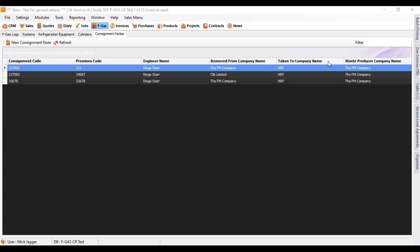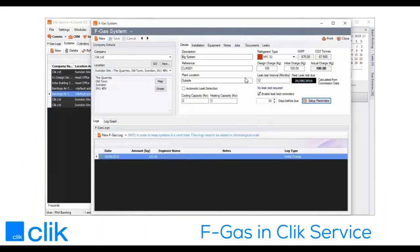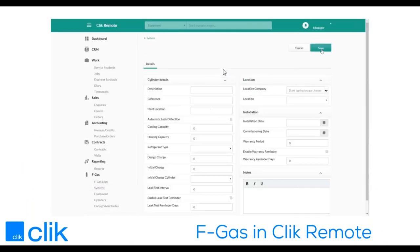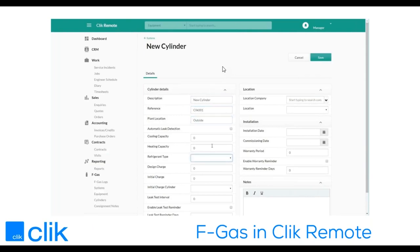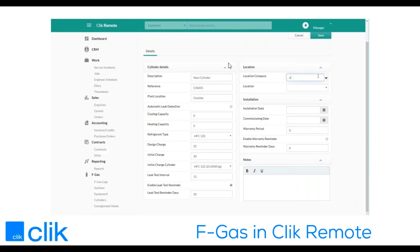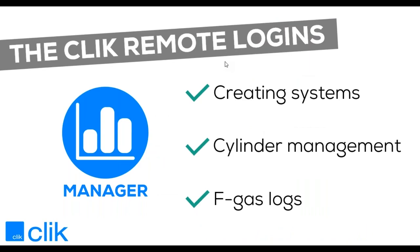The next Qlik Remote update will introduce some of these features into the manager, engineer, and customer logins of Qlik Remote. The manager version will offer the ability to create systems and add equipment to those systems — a system being the entire system of indoor and outdoor units, while equipment refers to individual units such as ceiling units or outdoor units. You will be able to log charges — both removals and additions — and do leak tests, all tying into the job sheet side of the system.